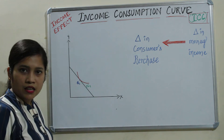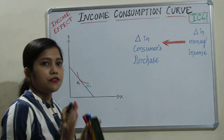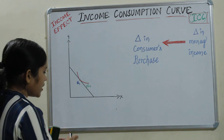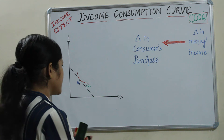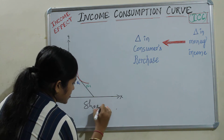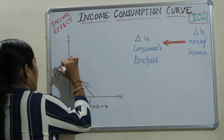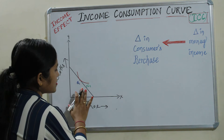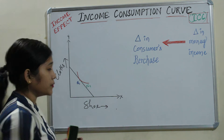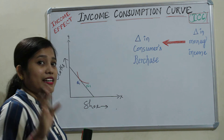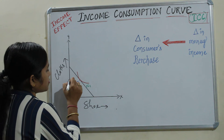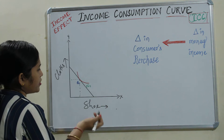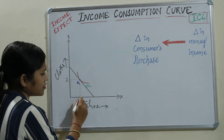We have known the definition of income effect. Now graphically we will cover it, because the graph is very important in this concept. Let's take two normal goods — shoe on the X-axis and clothes on the Y-axis. This is your budget line and this is your indifference curve. The point of tangency is the consumer equilibrium — that means at this position the consumer has optimized.